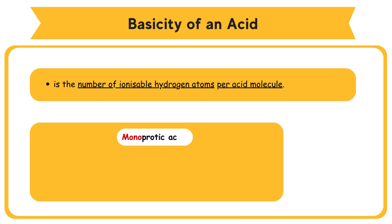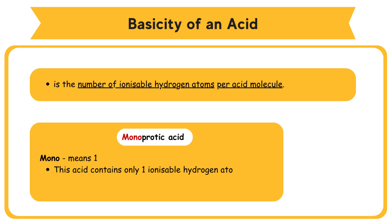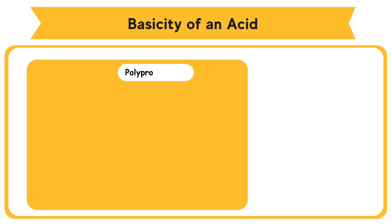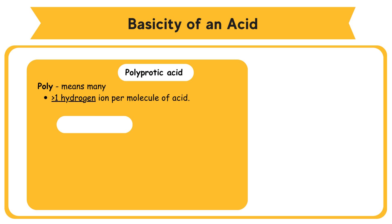Monoprotic acid — mono means one — this acid contains only one ionizable hydrogen atom, producing only one hydrogen ion (proton) per molecule of acid. Example: hydrochloric acid, HCl. Polyprotic acids can produce more than one hydrogen ion per molecule of acid. Diprotic acid can produce two hydrogen ions per molecule of acid.